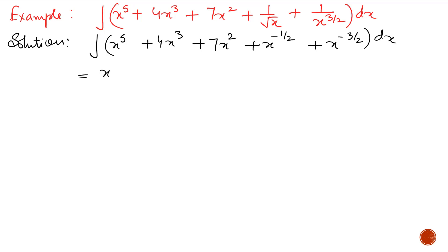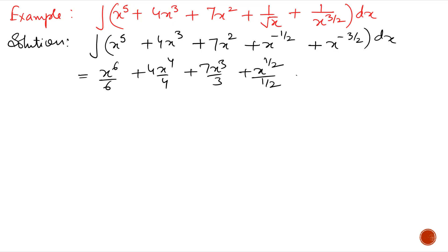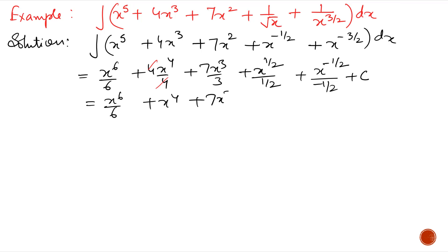Now integrate: we will get x⁶/6, then 4 as it is, x⁴/4, plus 7 as it is, x³/3, plus x^(1/2) upon 1/2, and x^(-3/2) integrates to x^(-1/2) upon -1/2, plus c. The final answer is x⁶/6 + x⁴ + 7x³/3 + 2√x − 2/√x plus c.